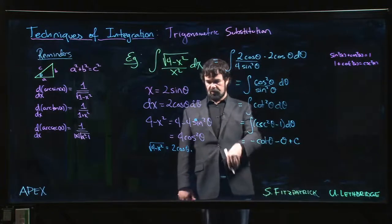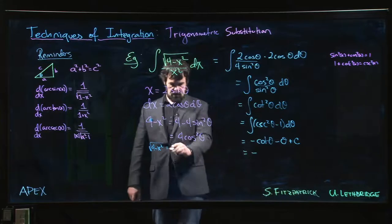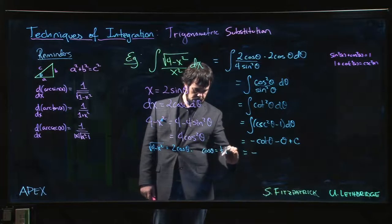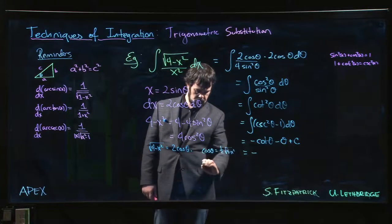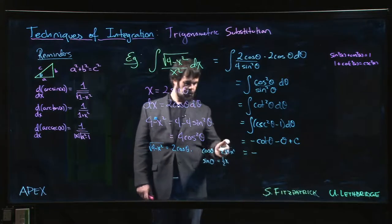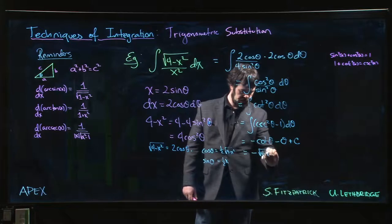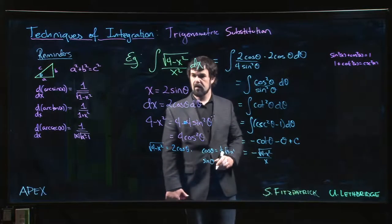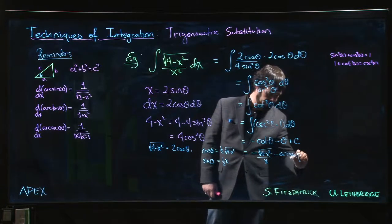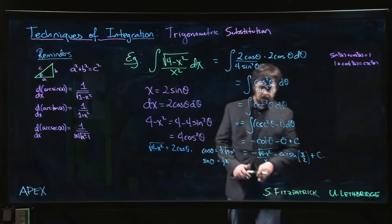So cotan is cos over sine, right? So we've got to come back to here. We've got to say, okay, so cosine over sine. So cos theta is 1 half square root 4 minus x squared. Sine theta is 1 half x. So if we divide them, the halves are going to cancel. So I get the square root of 4 minus x squared over x minus theta, which is our sine of x over 2 plus our constant.